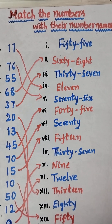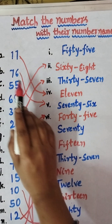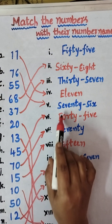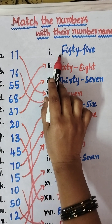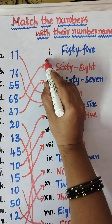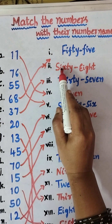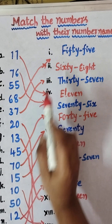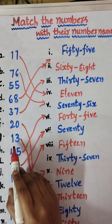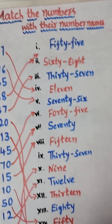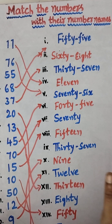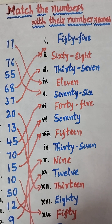So here: 11, 76, 55, 68, 37, 20, 13 — like this we have to practice. Match the numbers with their number names. Thanks for watching, children! If you like the video, please like, share, and subscribe to our channel, Babes Kids Tutorial. Thanks for watching!